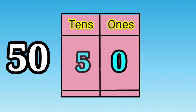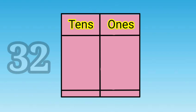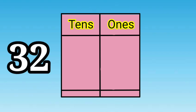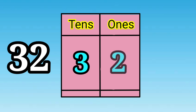Now we have number three two, thirty two. Children, will number three go in ones place? No, it will go in tens place. And number two will go in which place? Two will go in ones place.